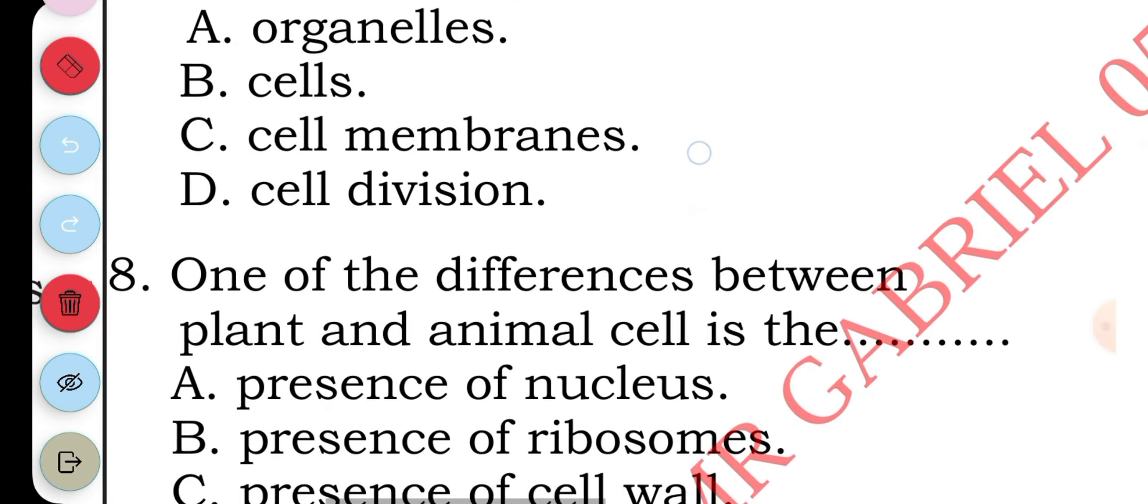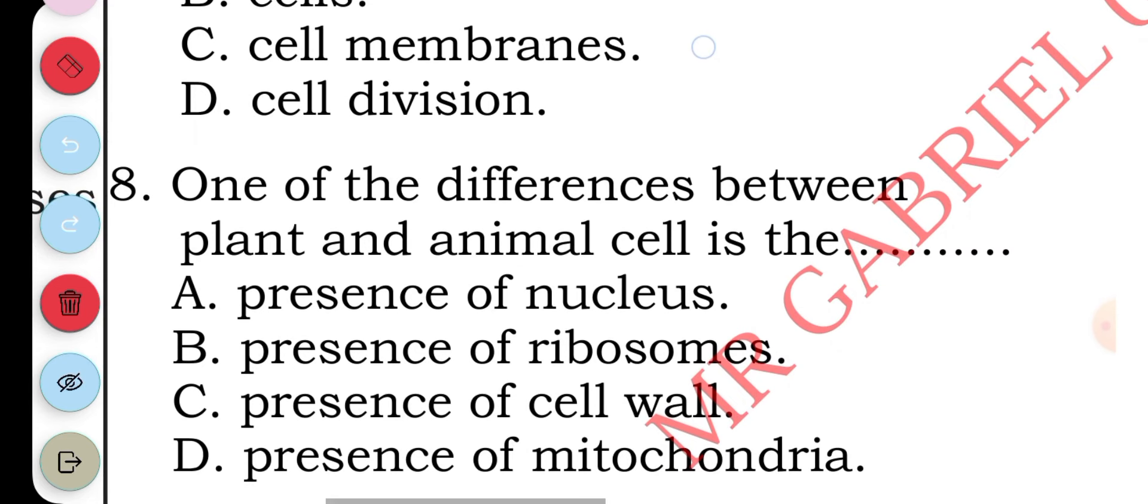Question eight: one of the differences between plant and animal cell is the: A presence of nucleus, B presence of ribosomes, C presence of cell wall, D presence of mitochondria. The answer to question eight is C, presence of cell wall.